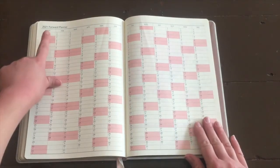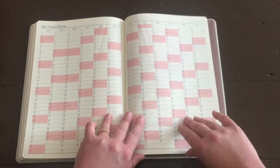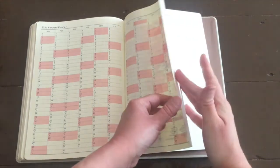There's a forward planner for next year so you've got plenty of space for that. The world map is in really pretty colors. Have a look at that.